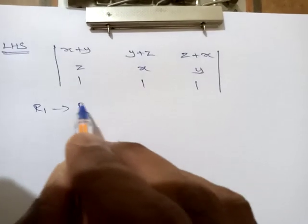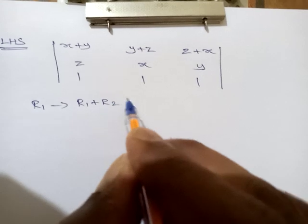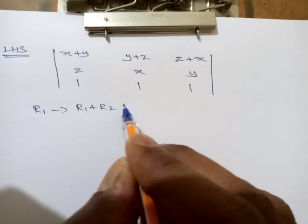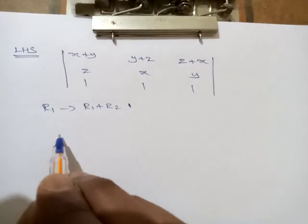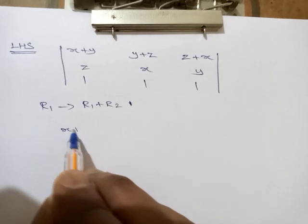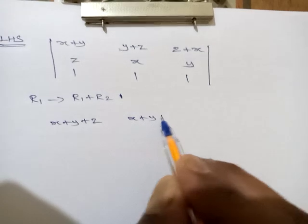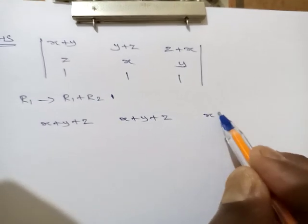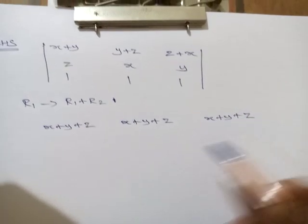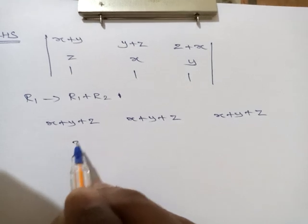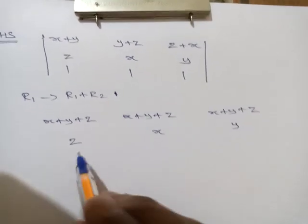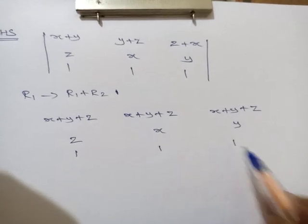That is what I am going to do in the next step. Apply r1 → r1 + r2. So now the first row becomes x+y+z, x+y+z, x+y+z. Second row remains as it is: z, x, y. Third row as it is: 1, 1, 1.